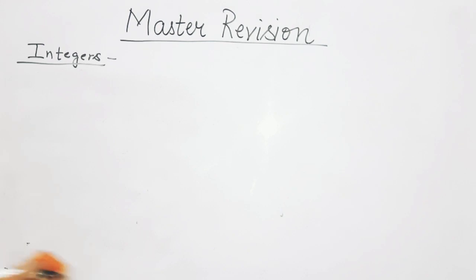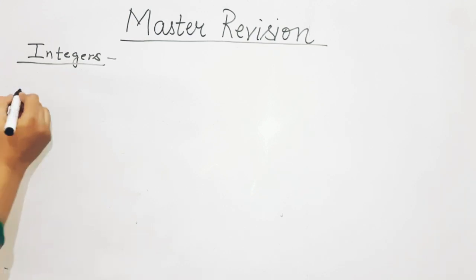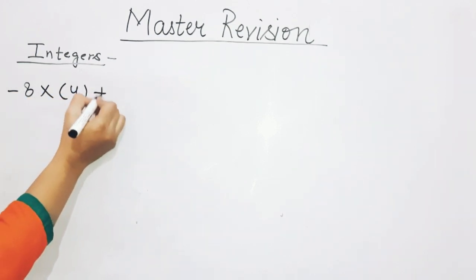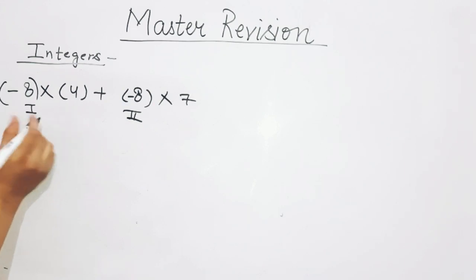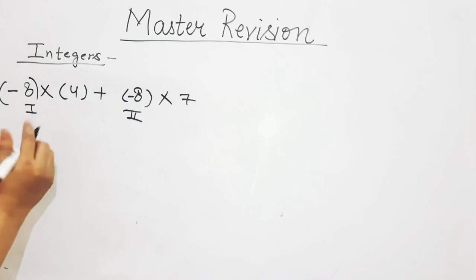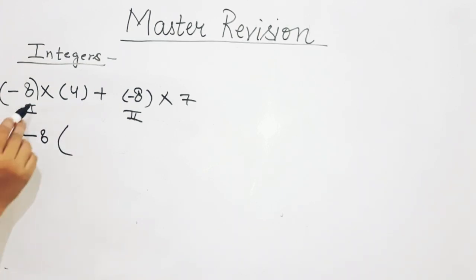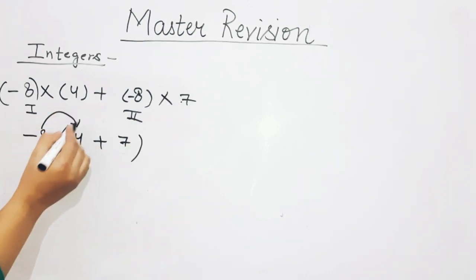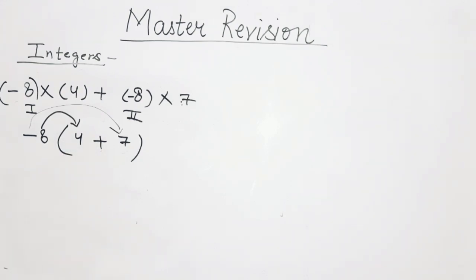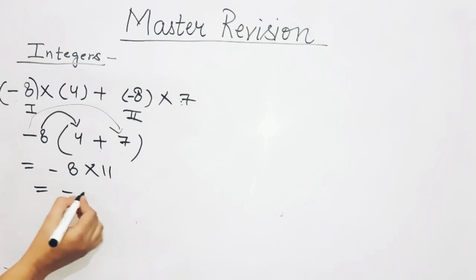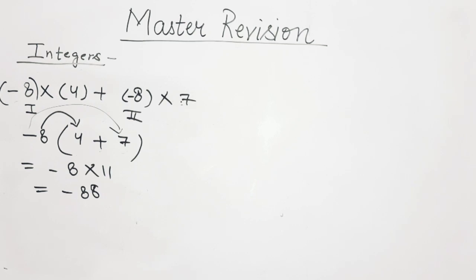Those students who are not watching the video will miss out — so please share the video with your friends. One more question: minus 8 multiplied by 4 plus minus 8 multiplied by 7. Here minus 8 is repeated, so take it outside: minus 8 multiplied by bracket 4 plus 7. That gives minus 8 multiplied by 11, which equals minus 88.